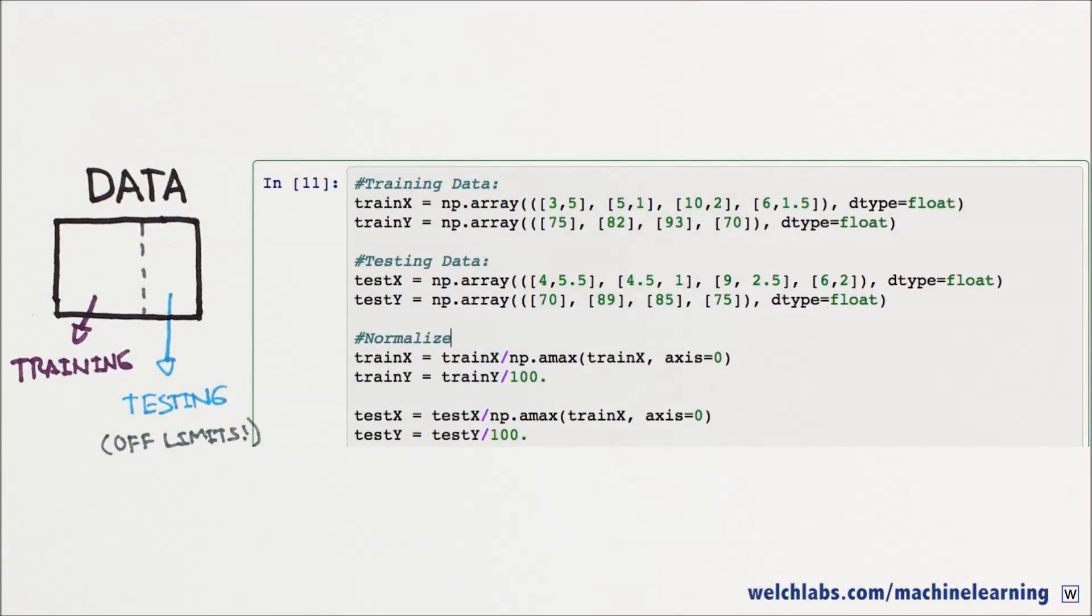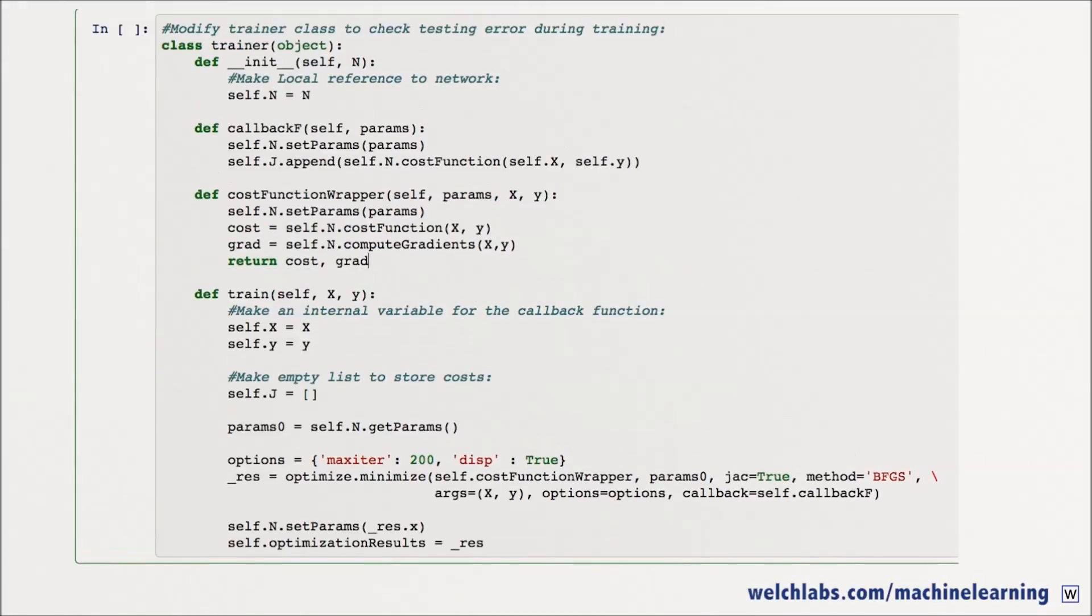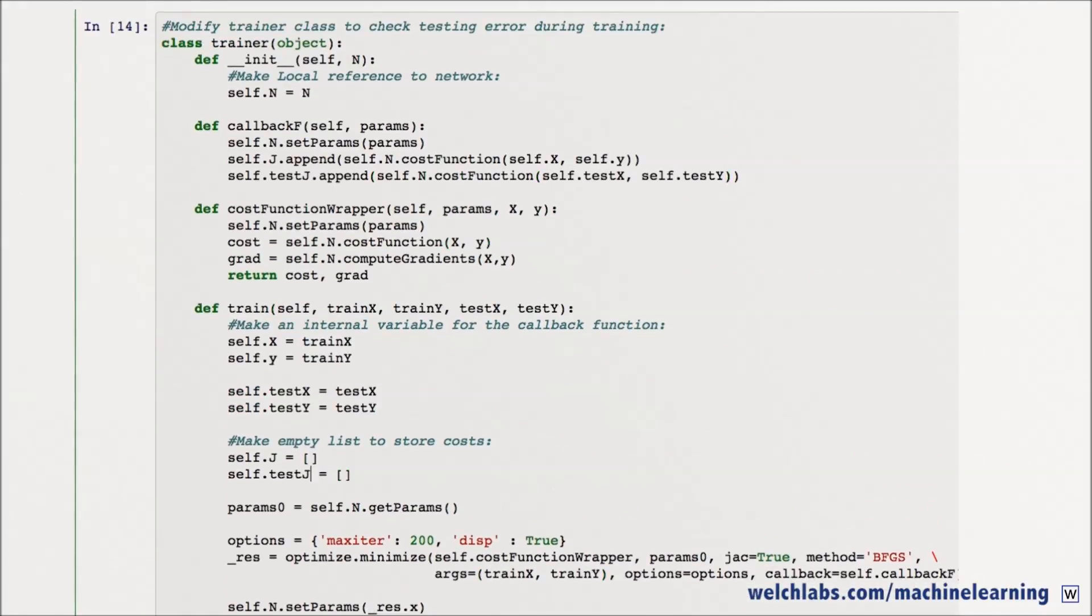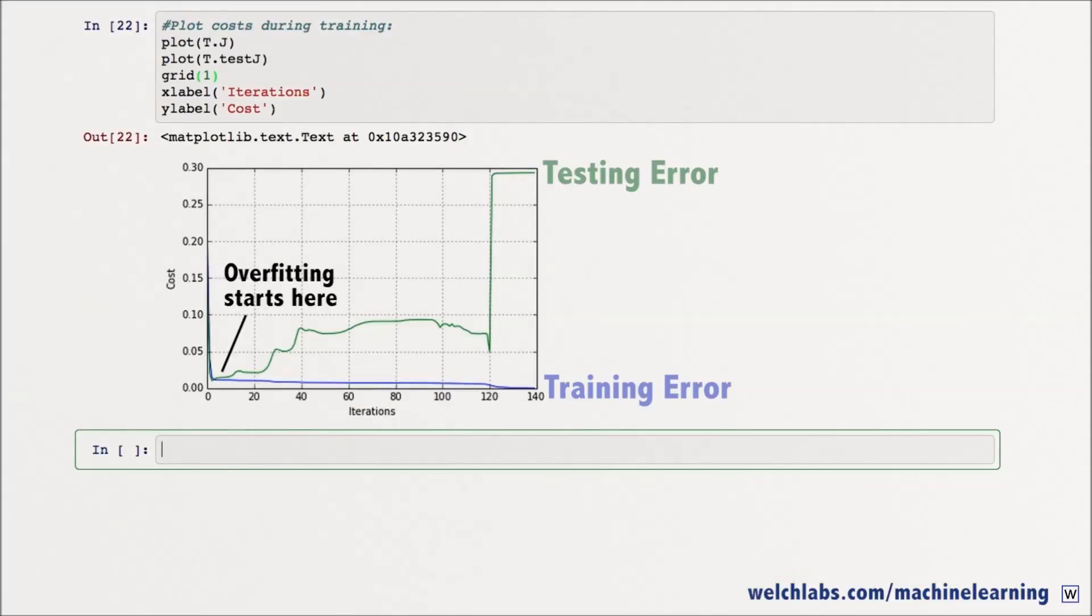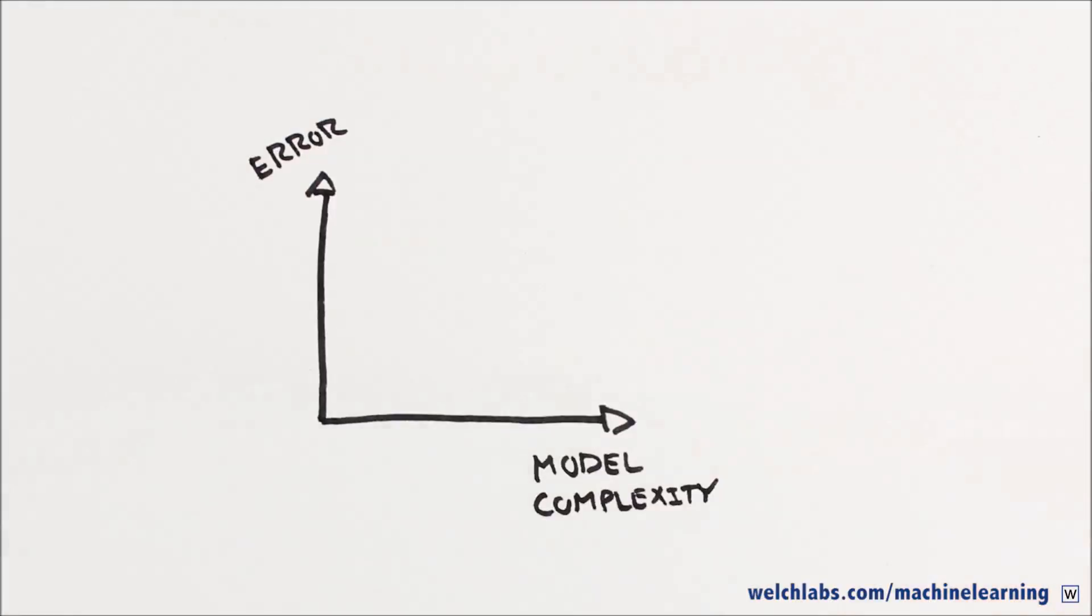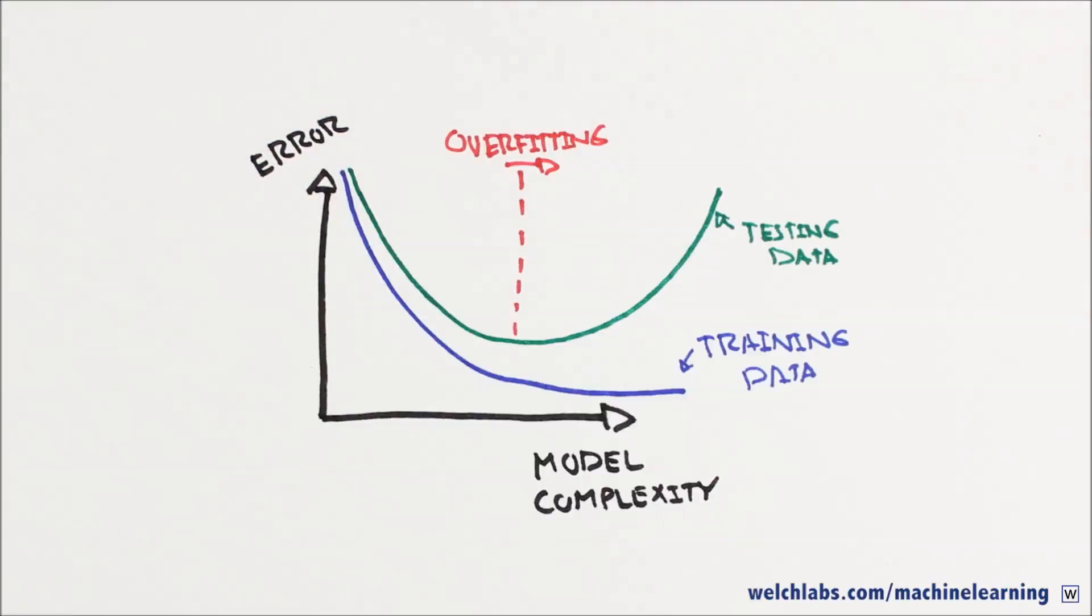Our testing data is a simulation of the real world. We can plot the error on our training and testing sets as we train our model, and identify the exact point at which overfitting begins. We can also plot testing and training error as a function of model complexity and see similar behavior.